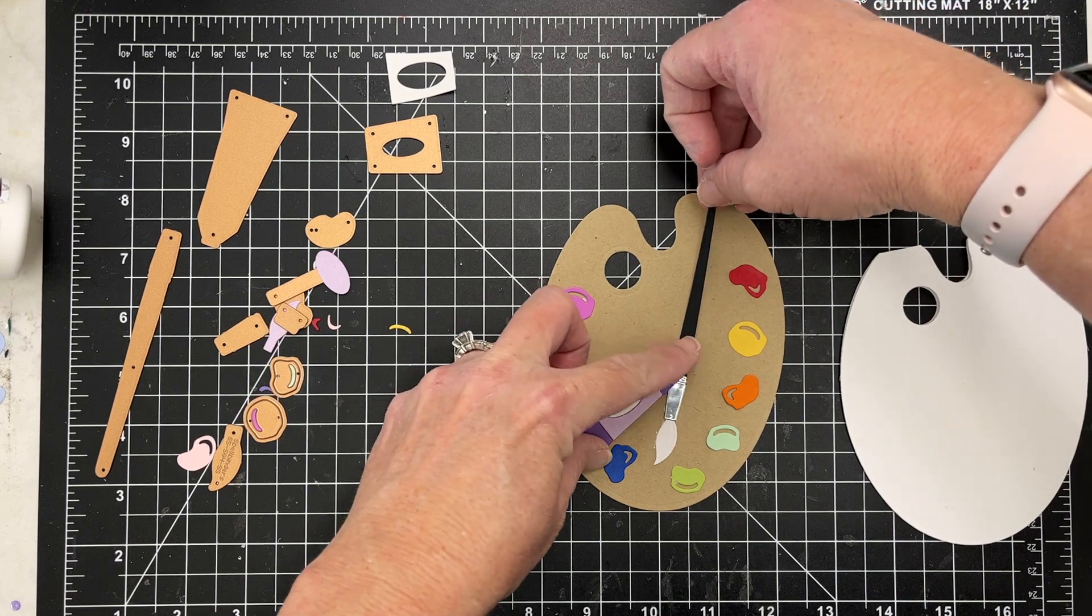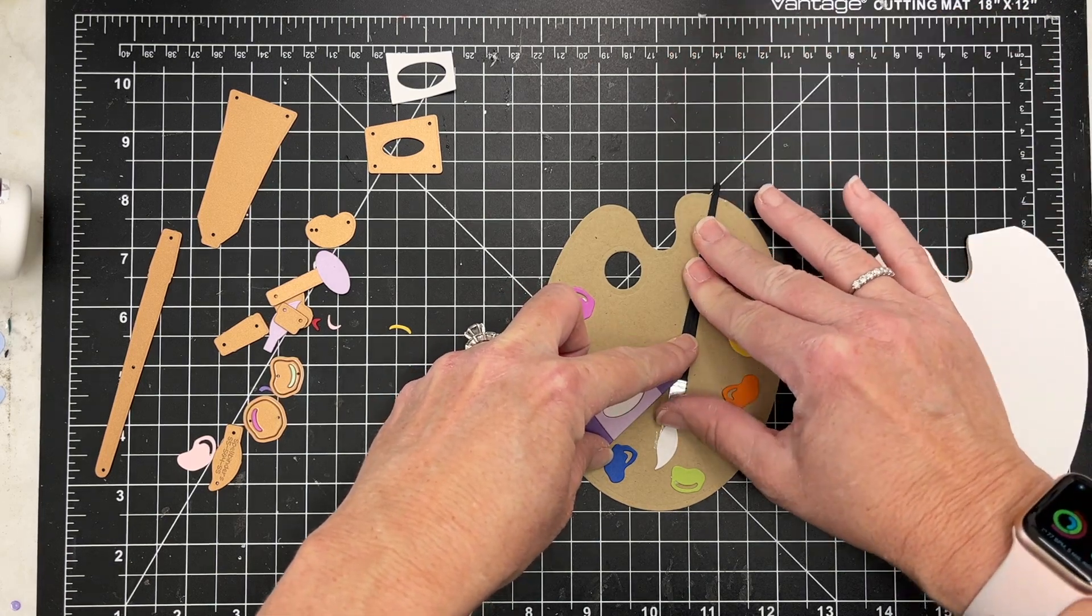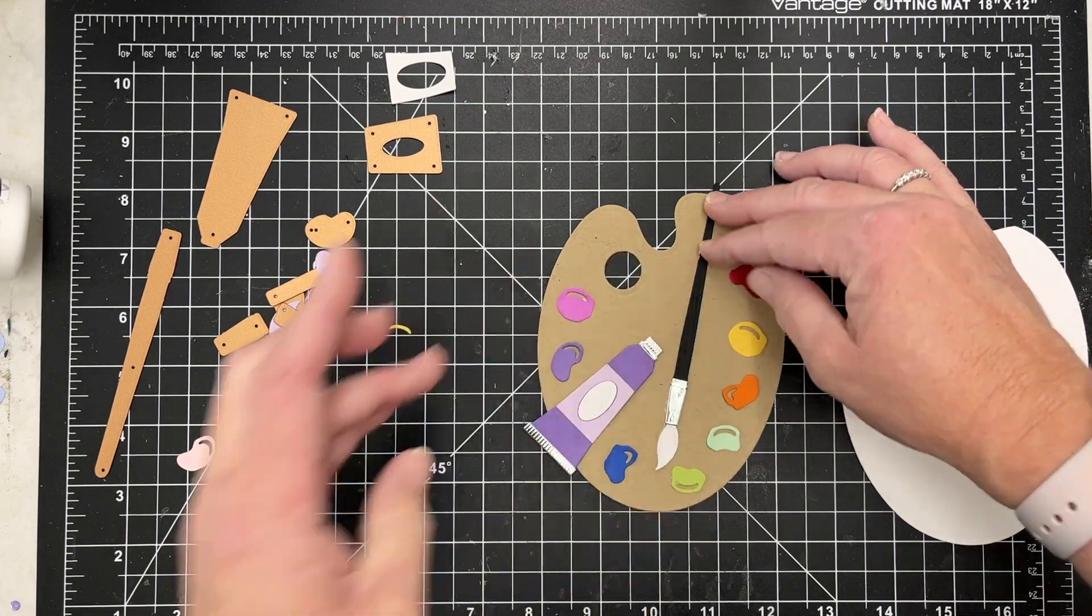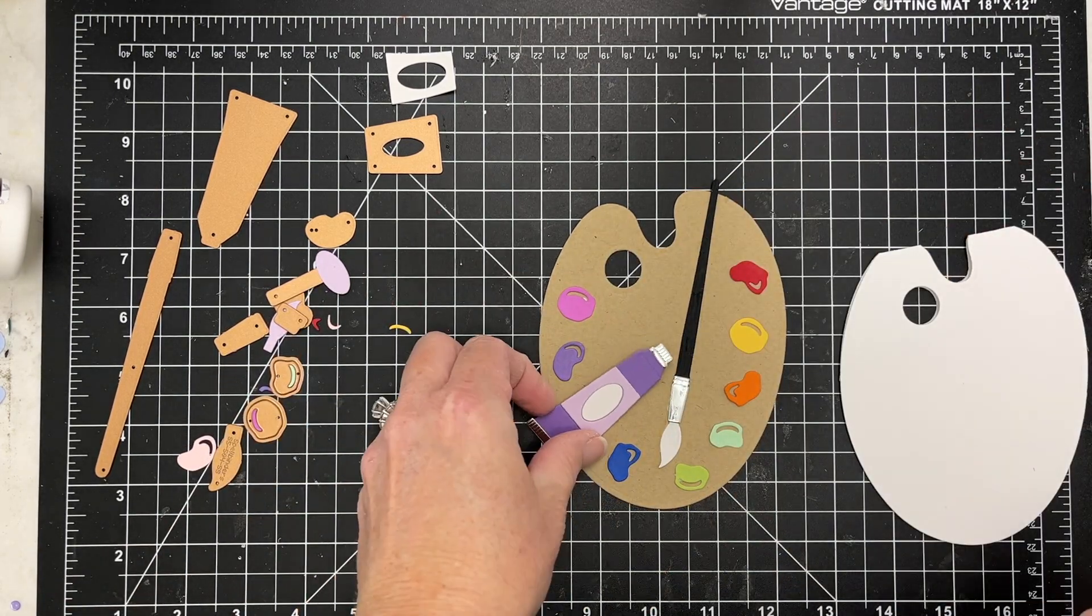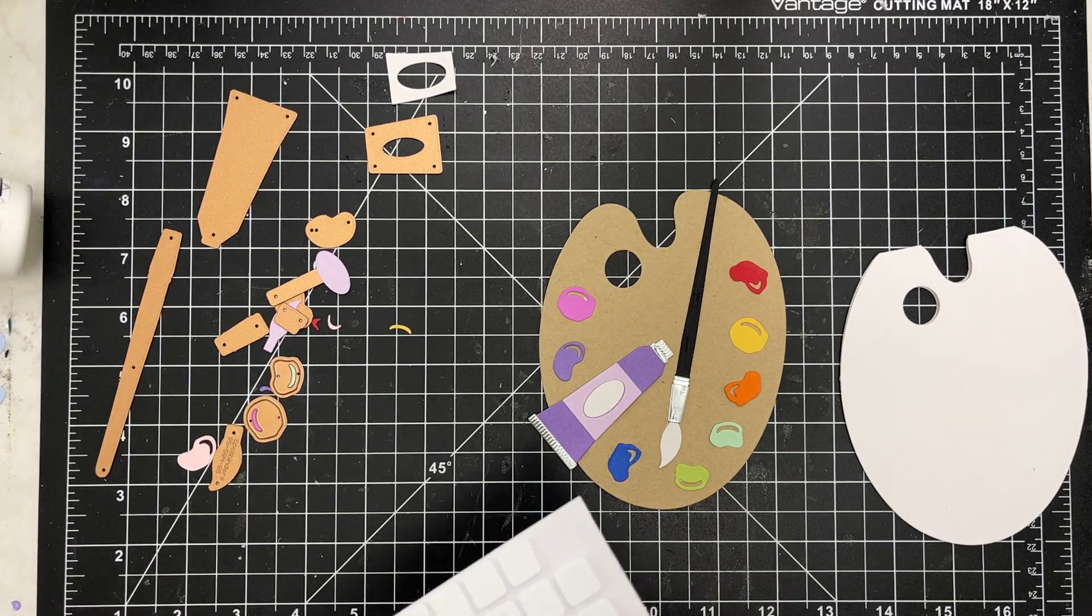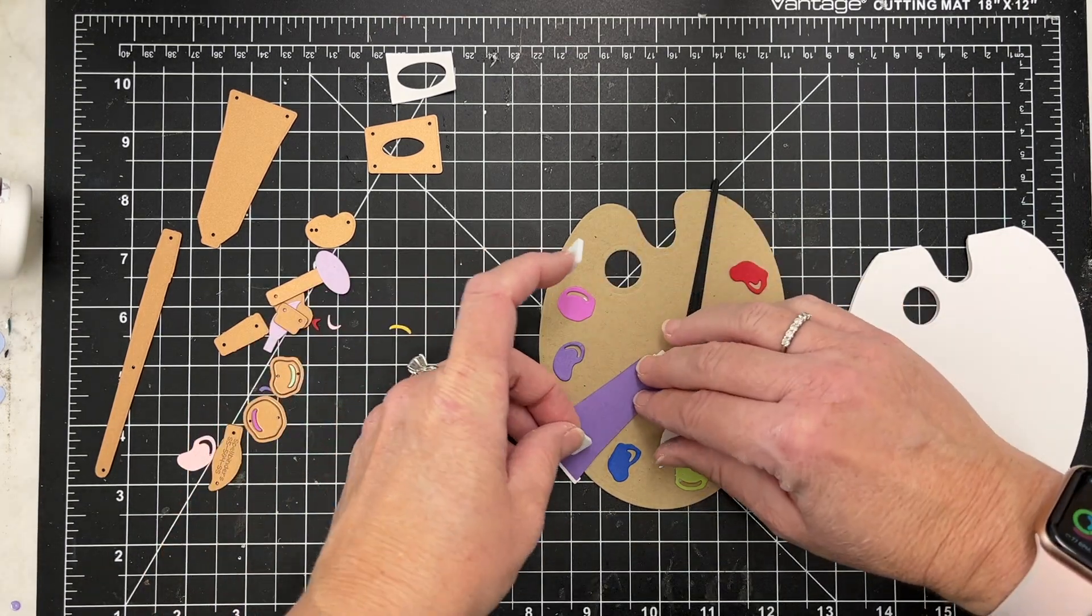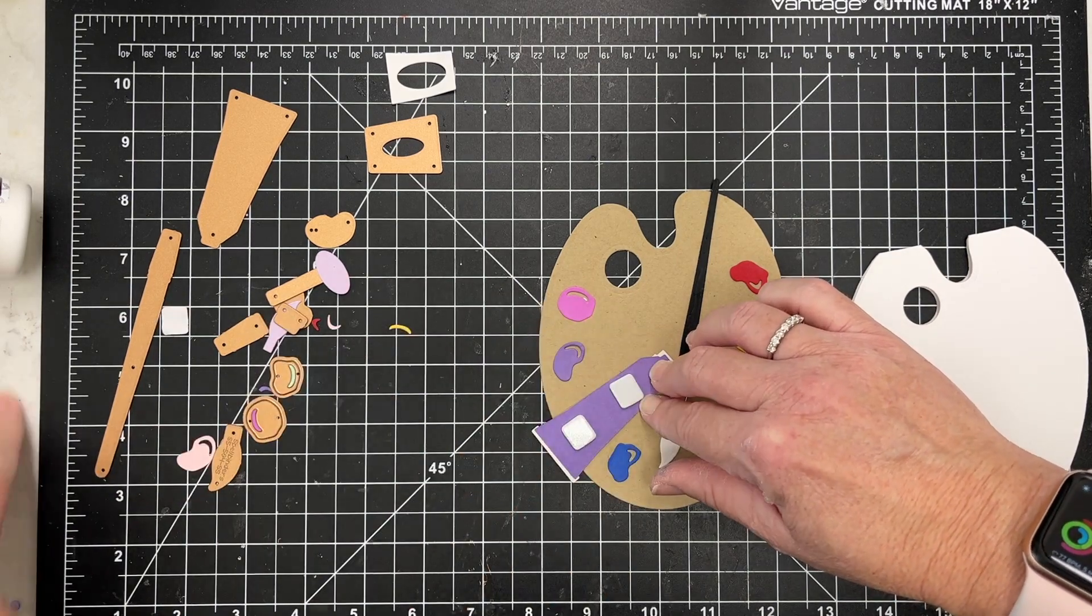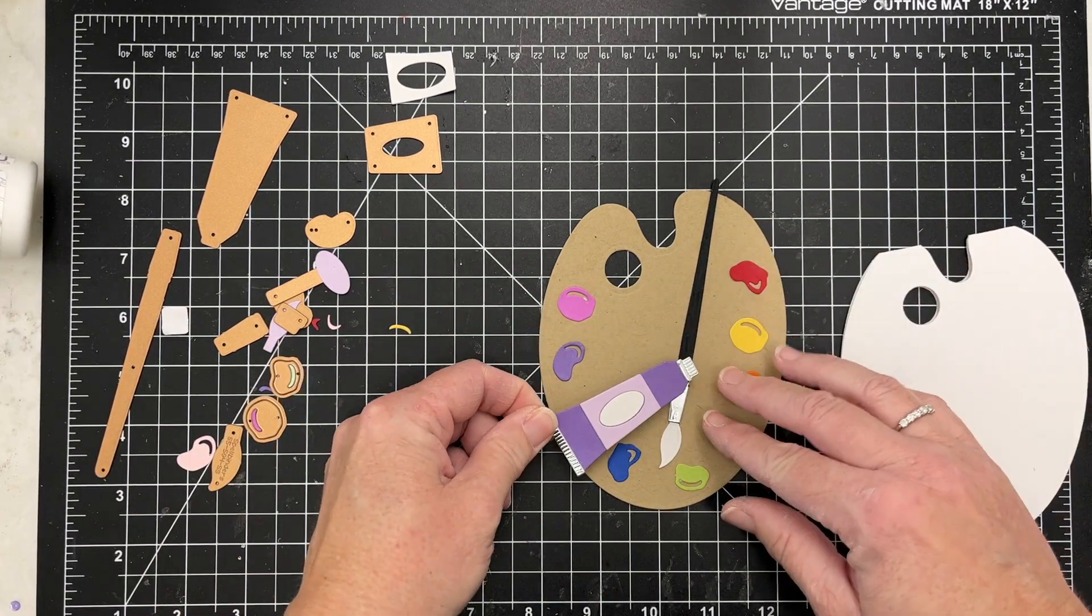And this will fit in an A2 sized envelope once it is finished, so it's perfect to fit in your already existing envelopes. I'm going to take a little bit of foam here to pop this up and then I will add that after I stamp my sentiment.